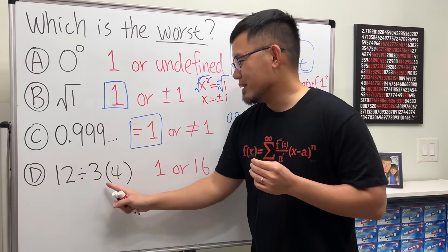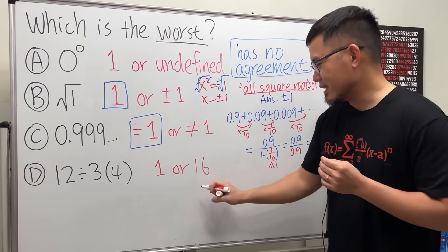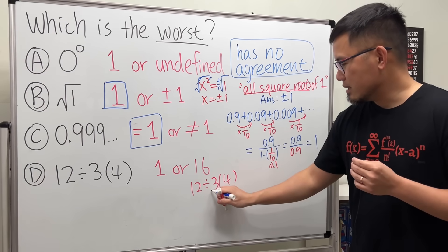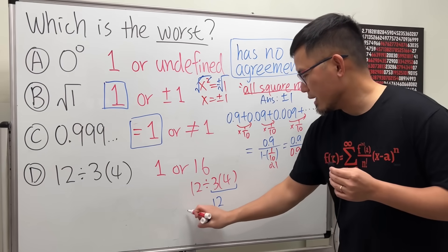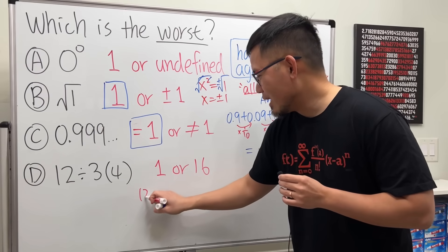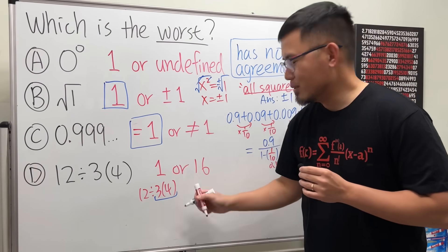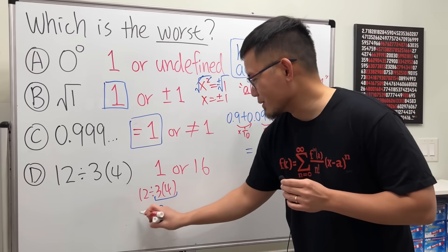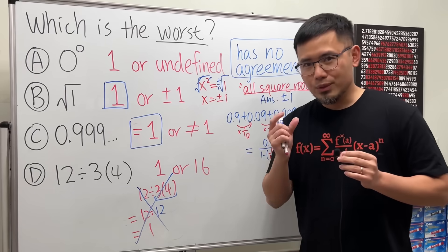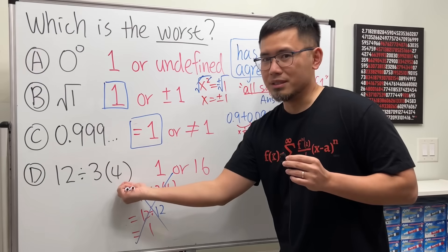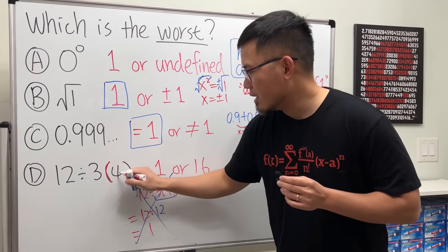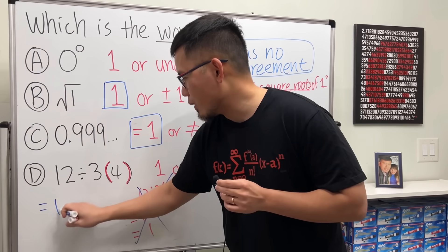Lastly: 12 divided by 3, parentheses 4 — so 12÷3(4). How do people get one? They see 3(4) and say 'do the parentheses first,' treating 3(4) as 3 times 4 equals 12, then 12 divided by 12 equals 1. But this is not correct. When we say 'do the parentheses first,' we mean do the inside of the parentheses first — but inside here is just the number 4, there's nothing to compute. The parentheses here simply indicate multiplication.